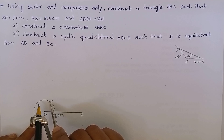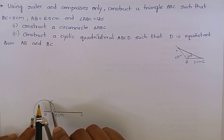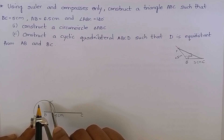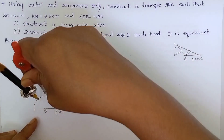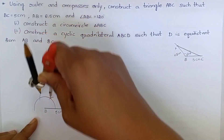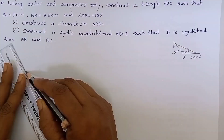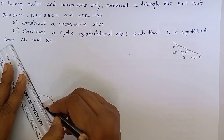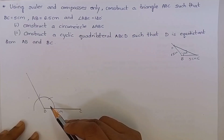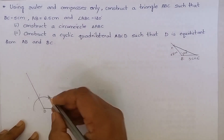Without changing the measurement of the compass, keep the compass at this point and cut an arc. Now join this. It measures 120 degrees.